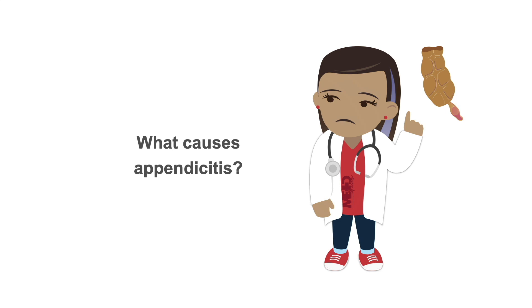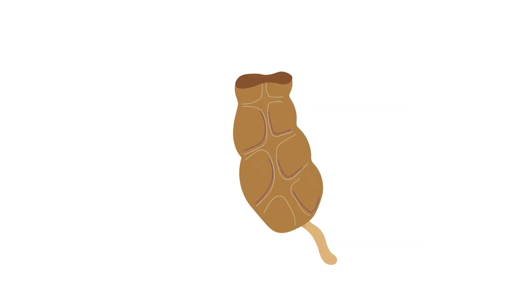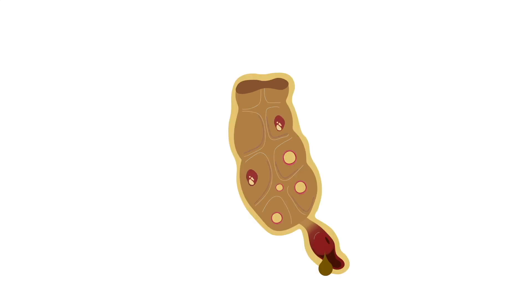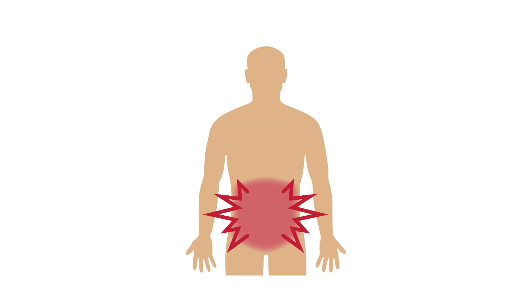So what causes appendicitis? Appendicitis is thought to be caused by a source of obstruction, which leads to inflammation of the appendiceal wall. This causes localized ischemia and can lead to perforation, which is a major complication of appendicitis. Other complications include abscess and peritonitis.